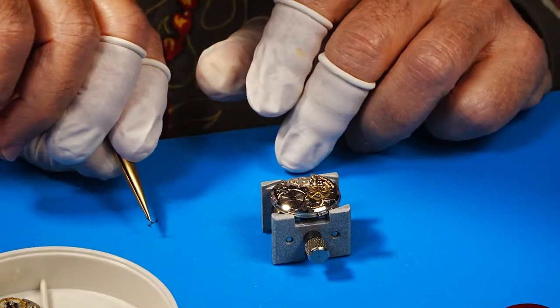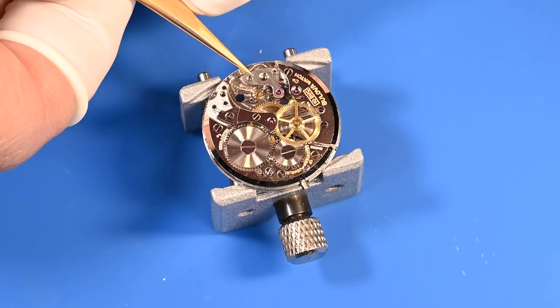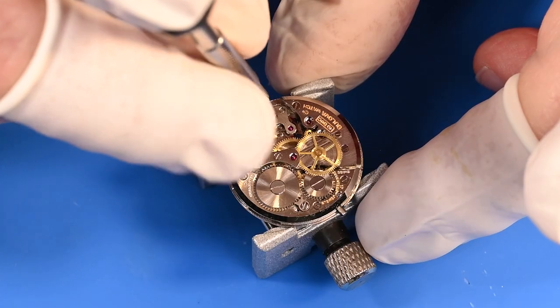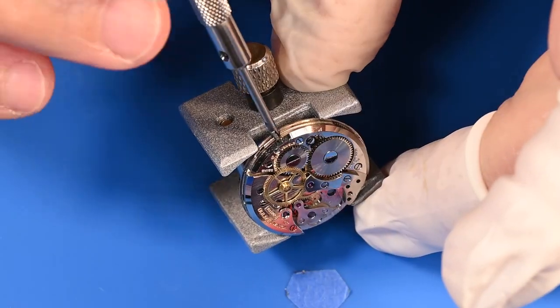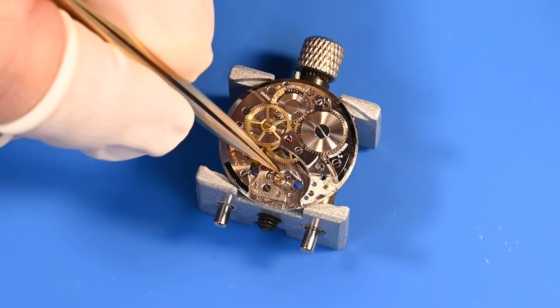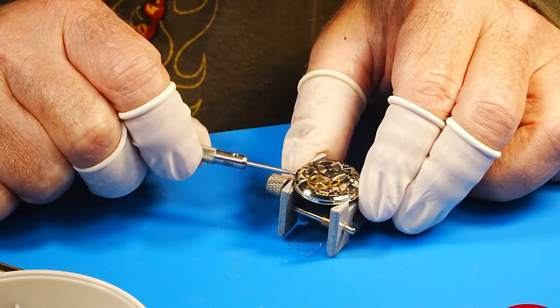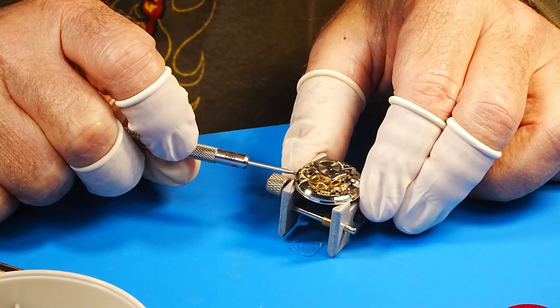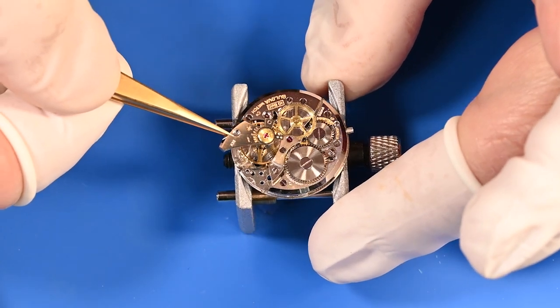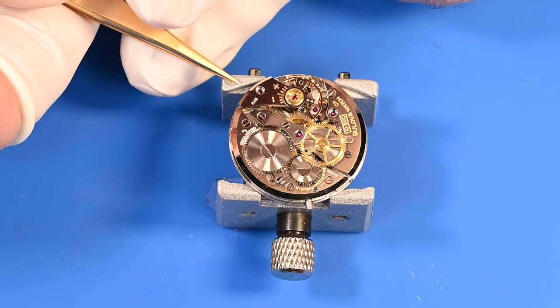We're in the home stretch. It's almost time to see if we can get this watch running again. We'll install the pallet fork and the pallet fork bridge. I'll give the watch a bit of a wind and see if we can make the pallet fork jump back and forth between the banking pins. That is very nice. That's exactly what we want to see. This is the exciting part. Let's see if we can bring it back to life. With a full wind in the mainspring, we're going to reintroduce the balance assembly. Carefully settling that balance into the pivots. This is the moment of truth we've been waiting for.